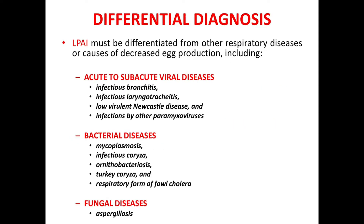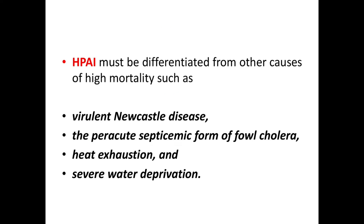For differential diagnosis: LPAI must be differentiated from other diseases causing respiratory signs or decreased egg production, including viral diseases such as infectious bronchitis, infectious laryngotracheitis (ILT), mild Newcastle disease, and paramyxoviruses; bacterial diseases like Mycoplasma, infectious coryza, turkey coryza, and the respiratory form of fowl cholera; and fungal diseases like aspergillosis. HPAI must be differentiated from other causes of high mortality such as virulent Newcastle disease, the peracute form of fowl cholera, heat exhaustion, and severe water deprivation.